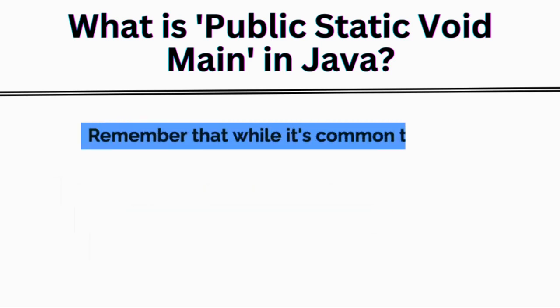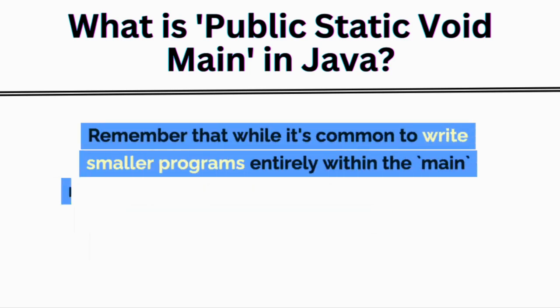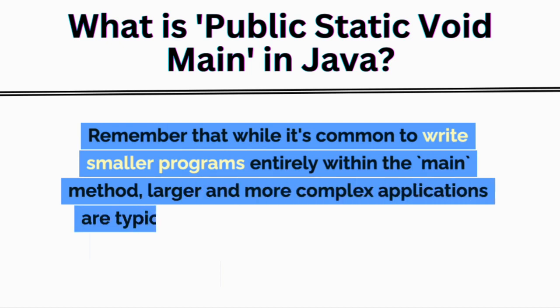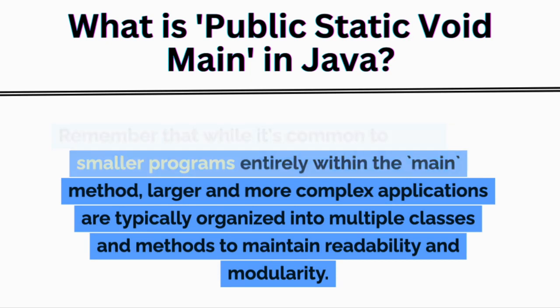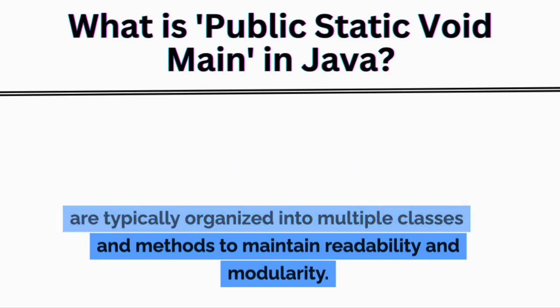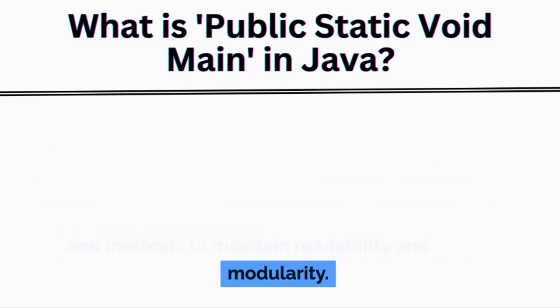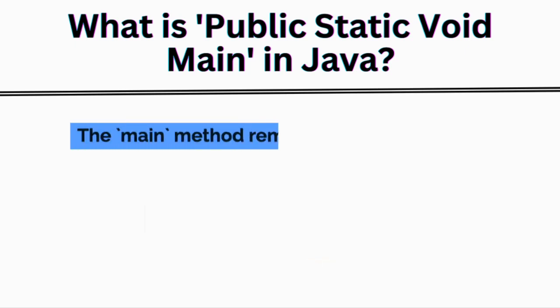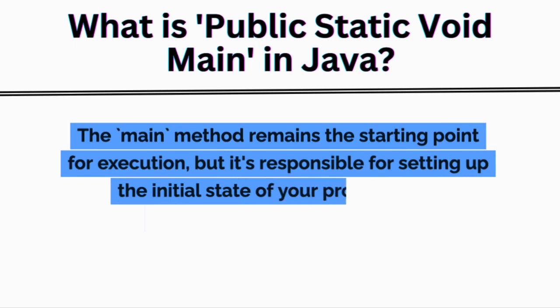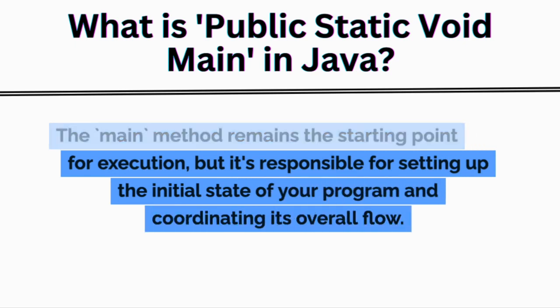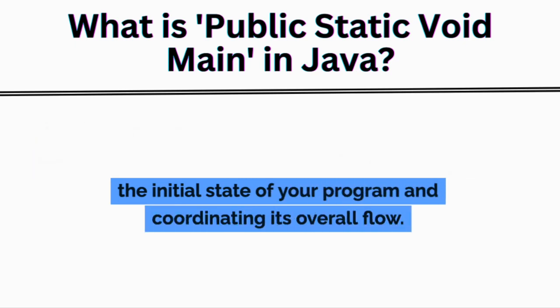Remember that while it's common to write smaller programs entirely within the main method, larger and more complex applications are typically organized into multiple classes and methods to maintain readability and modularity. The main method remains the starting point for execution, but it's responsible for setting up the initial state of your program and coordinating its overall flow.